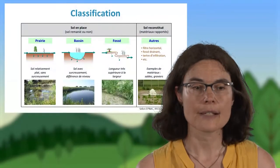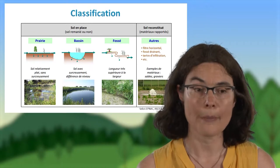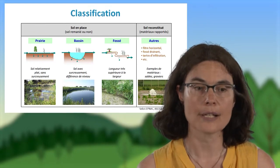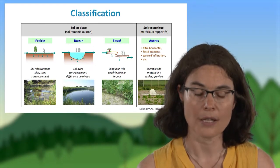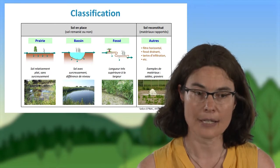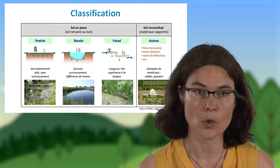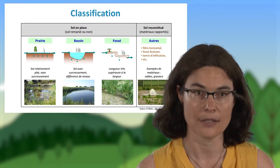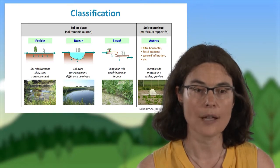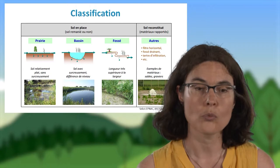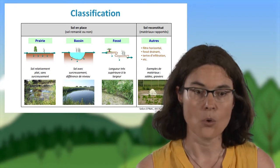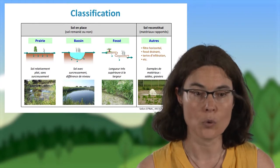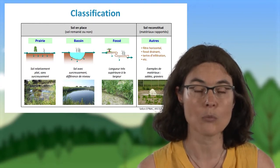Du point de vue réglementaire, ces zones de rejet végétalisées ne font pas partie à proprement parler de la station d'épuration urbaine, qui doit respecter ses objectifs de performance en amont de la zone de rejet végétalisée. Toutefois, elles peuvent être implantées en complément pour limiter l'impact de la station sur les milieux naturels. Certains services de police de l'eau les exigent lorsqu'à l'aval il y a un milieu particulièrement sensible.